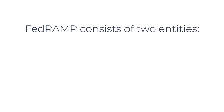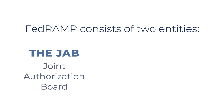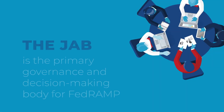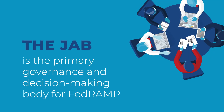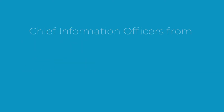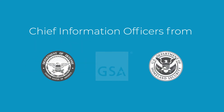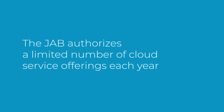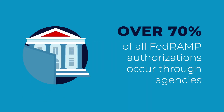FedRAMP consists of two entities: the Joint Authorization Board, or JAB, and the Program Management Office, or PMO. The JAB is the primary governance and decision-making body for FedRAMP. Its members include the Chief Information Officers from the Departments of Homeland Security and Defense and General Services Administration. The JAB authorizes a limited number of cloud service offerings each year, and over 70% of all FedRAMP authorizations occur through agencies.